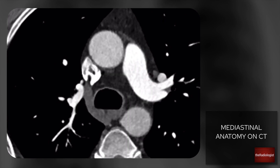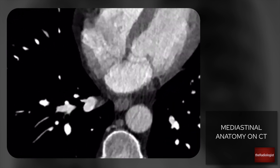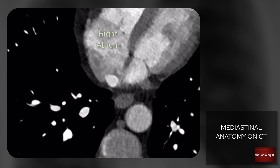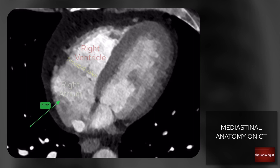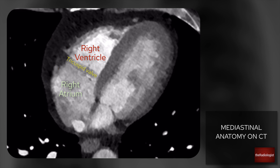We keep following the SVC down and it drains into the right atrium. From the right atrium, blood drains into the right ventricle through the tricuspid valve — which you don't tend to get a great view of on a non-gated CT. As the name suggests it has three cusps, but again you don't see them very clearly on CT. The right ventricle is the most anterior of all the heart chambers, so if someone were stabbed in the front of the chest, they may well get stabbed in the right ventricle.